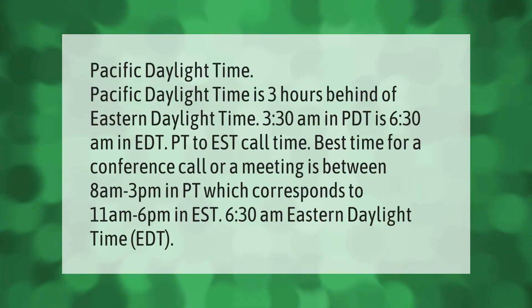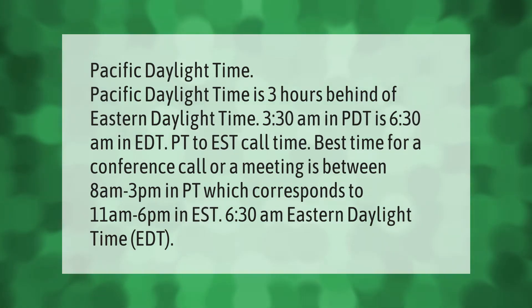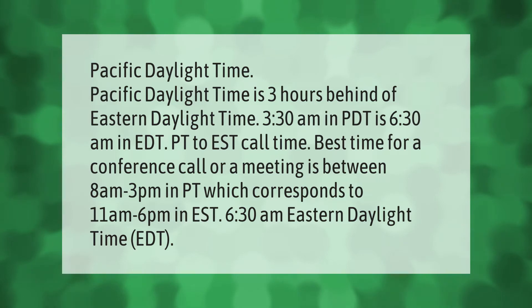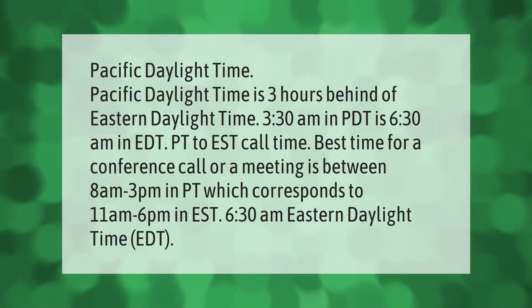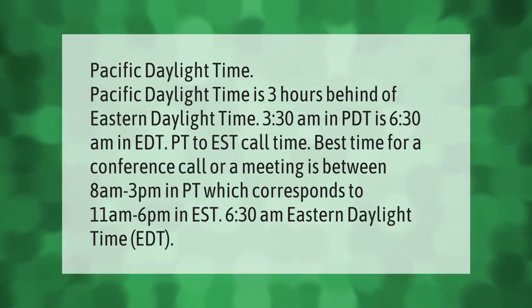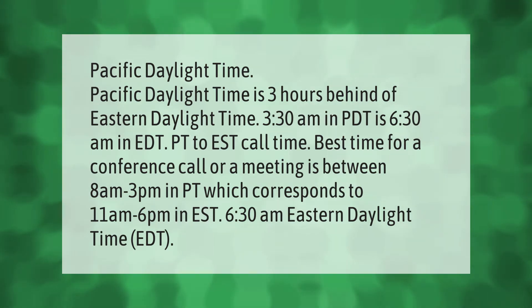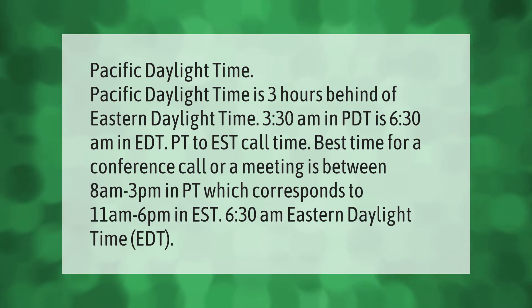Pacific Daylight Time is three hours behind Eastern Daylight Time. 3:30 a.m. in PDT is 6:30 a.m. in EDT. The best time for a conference call or meeting between PT and EST is between 8 a.m. to 3 p.m. in PT, which corresponds to 11 a.m. to 6 p.m. in EST.